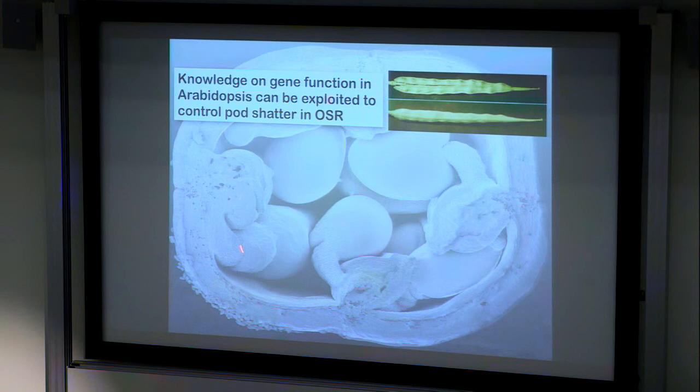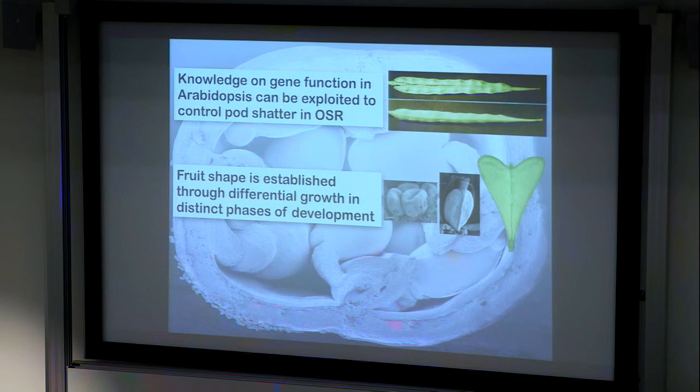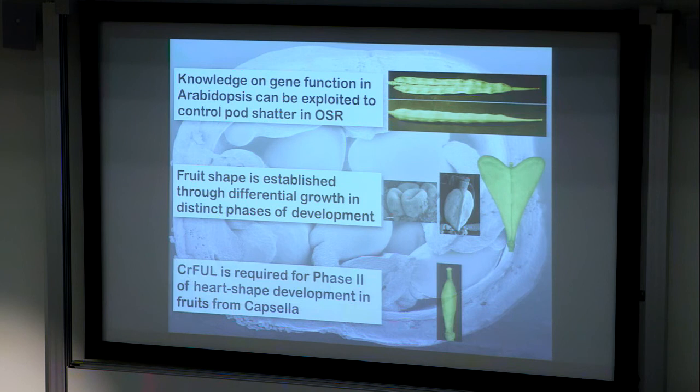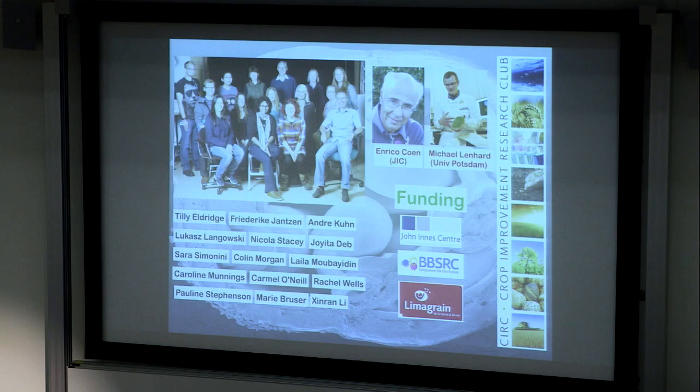To finish with the key points: we have shown that it is highly possible to transfer knowledge from Arabidopsis to address pod shatter in oilseed rape. We know that growth of Capsella fruits, and of some organs at least, happens in distinct phases of development, and we now know that the fruitful gene is important for the phase two heart shape formation in Capsella. This knowledge is what we believe we can take forward to address shape issues and regulate shape in oilseed rape. I'd like to thank the people from the lab, especially Tilly Eldridge, who has done all the work on Capsella, and our collaborations with Rico and Michael are very, very fruitful, I should say.